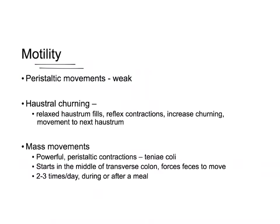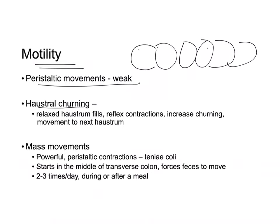The large intestines have weak peristalsis to move contents along, but also a process called haustral churning. The feces move from one haustrum to the next — a relaxed haustrum fills, then reflex contractions increase churning, and material moves down the large intestines through sequential haustral movement.